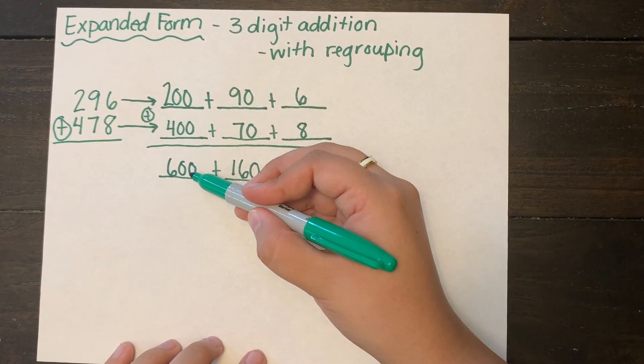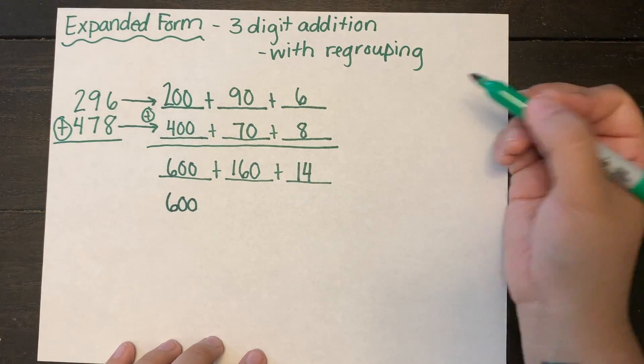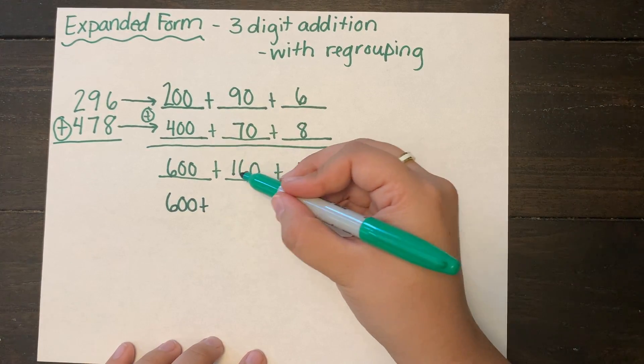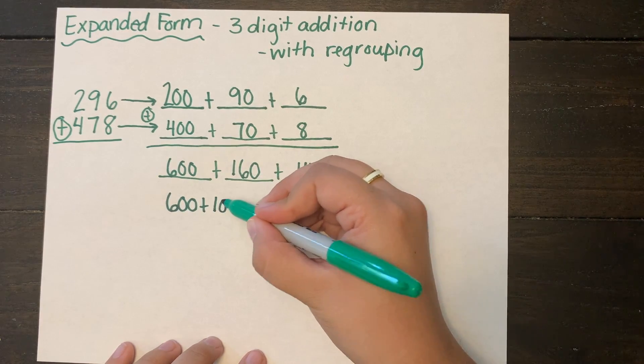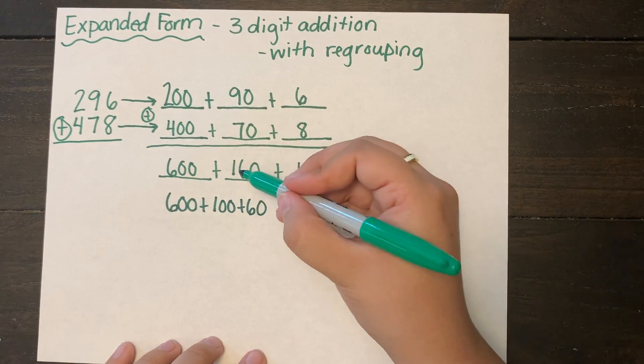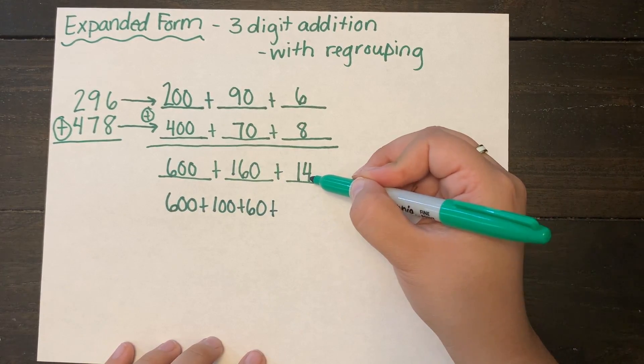So next I'm going to rewrite my equation expanding out any numbers that need expanded. So 160 can be expanded again into 100 plus 60. And my last number I'm going to expand out 14 into 10 plus 4.